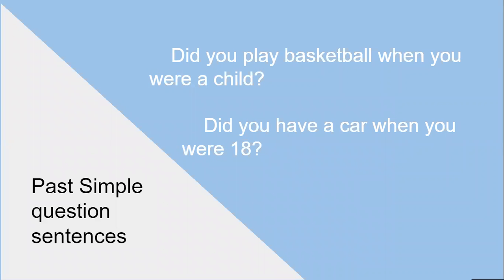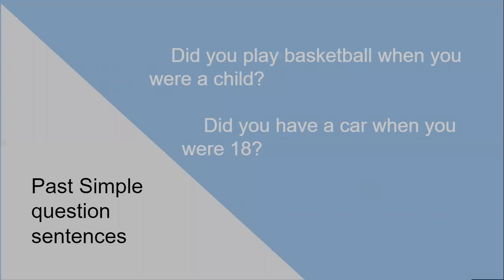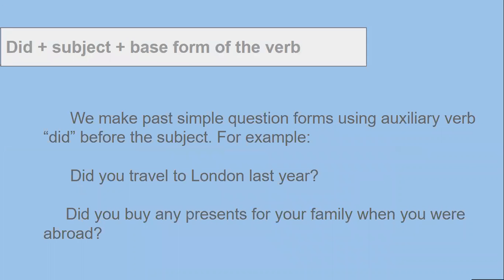Now let's move on to question sentences. Did you play basketball when you were a child? Did you have a car when you were 18? In order to make question sentences, we use auxiliary word did in front of the subject. Then we use the base form of the verb. For example, did you travel to London last year? Did you buy any presents for your family when you were abroad?